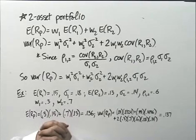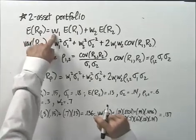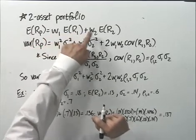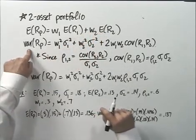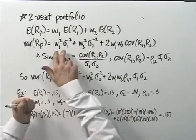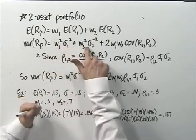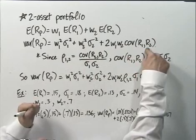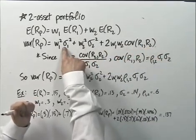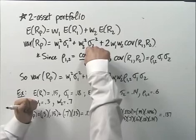Let's go to the whiteboard where I've written down the most basic portfolio — the two-asset portfolio. The expected return on the portfolio is simply W1 times the expected return on asset 1, plus W2 times the expected return on asset 2. The variance of the two-asset portfolio is W1 squared times sigma-1 squared, plus W2 squared times sigma-2 squared, plus 2 times W1 times W2 times the covariance between the return on asset 1 and the return on asset 2, where sigma-1 squared denotes the variance of asset 1 and sigma-2 squared denotes the variance of asset 2.